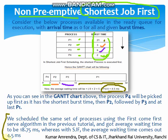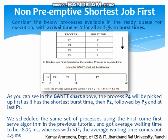Let's see the comparison between First Come First Serve and Shortest Job First. We scheduled the same set of processes using the First Come First Serve algorithm in the previous tutorial and got an average waiting time of 18.75 milliseconds, while with Shortest Job First non-preemptive we are getting 4.5 milliseconds. So we can see a significant reduction. Whenever the waiting time is reduced, CPU utilization improves. We always aim for the reduction of average waiting time and average turnaround time.